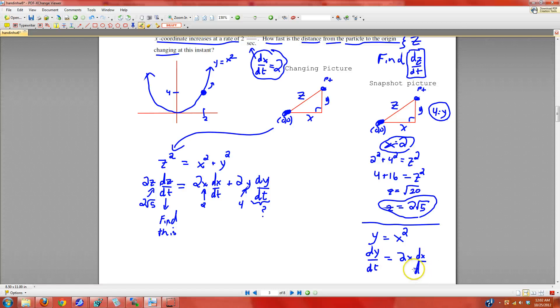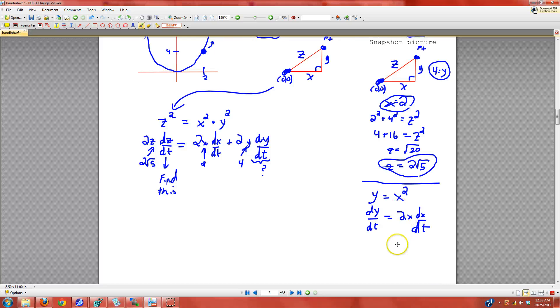From there you just take the derivative, dy dt is 2x times dx dt. That's it in general, but we know that x is 2, the dx dt is also 2. So 2 times 2 times 2, dy dt is 8.